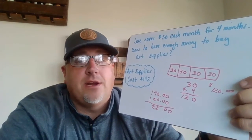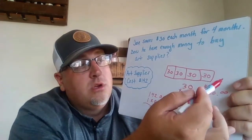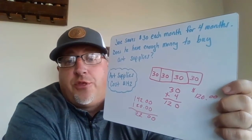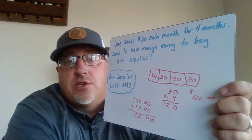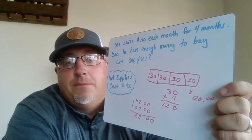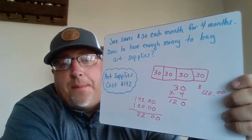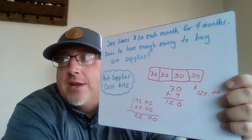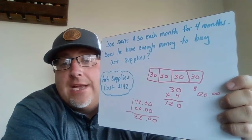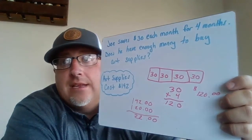The best thing to think about here is: if Joe saves money for one more month and saves another $30, he's going to have enough for his art supplies. So that's a two-step problem. We had to figure out the total saved first, then subtract to find the answer to the question. He did not have enough money — he's going to have to work another month.